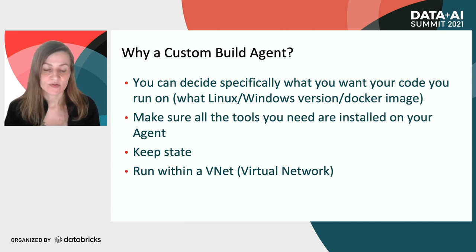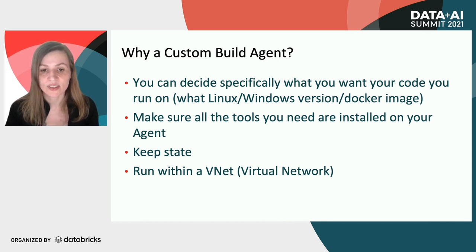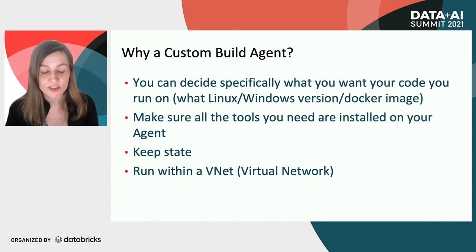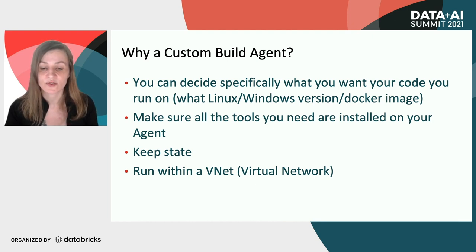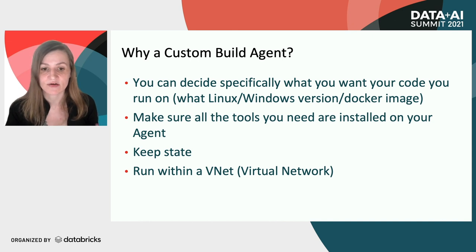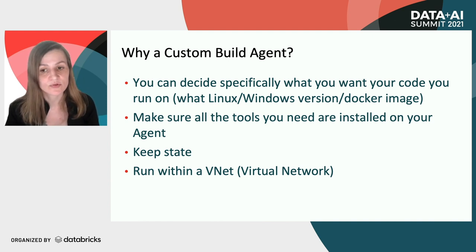Why would you use a custom build agent? You can decide specifically what you want your code to run on — whether you want a Linux machine, a Windows machine, what versions of your operating systems, what Docker image. You can make sure all the tooling you need is already installed on those machines, so you don't have to install specific packages every time in your pipeline. It can keep its state and it can also run within a VNet — a virtual network — which is super important for clients who want to keep everything secure.